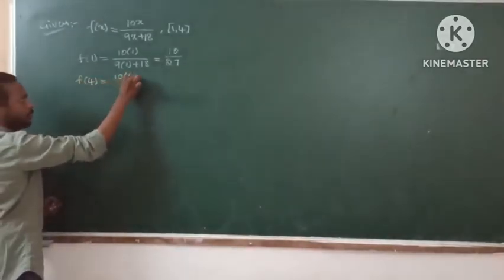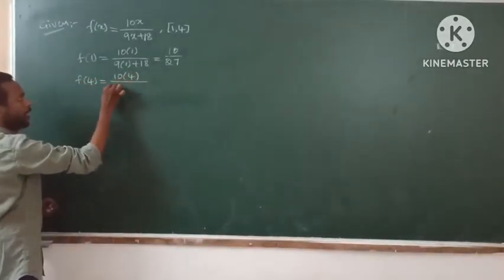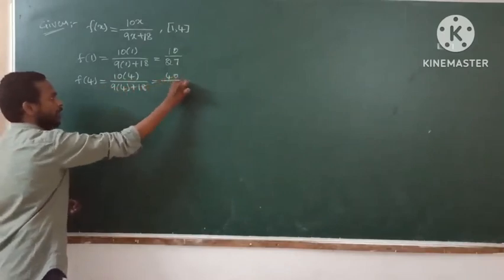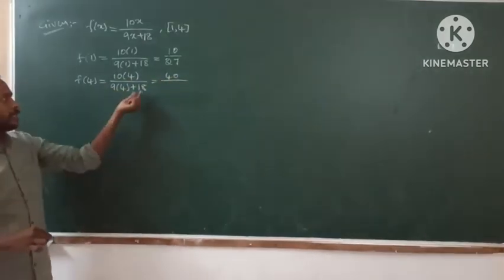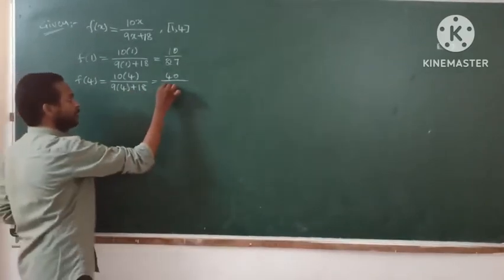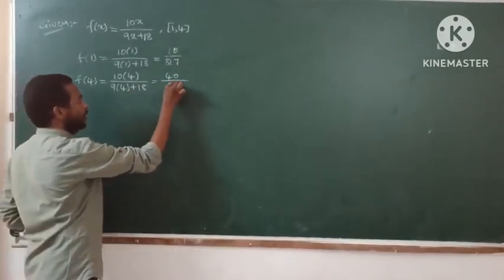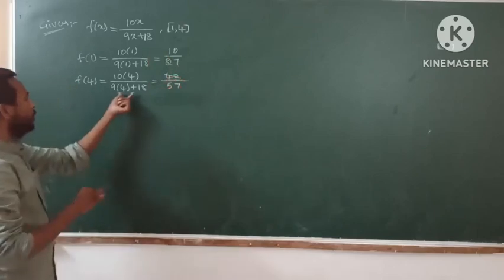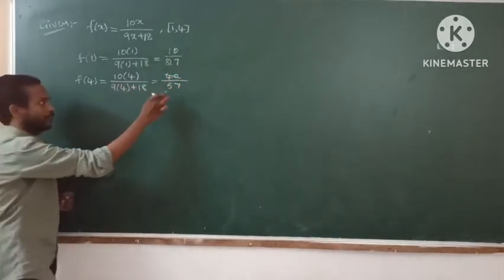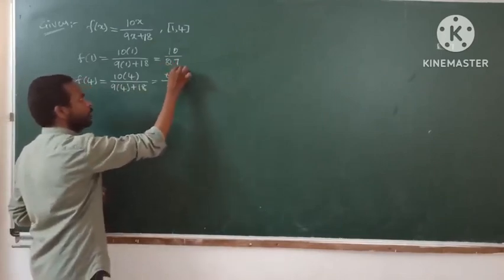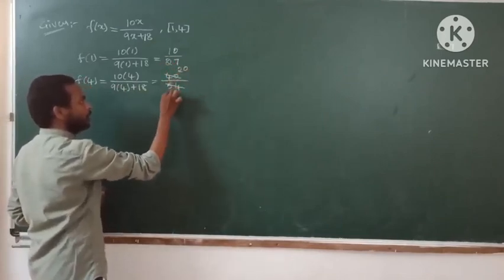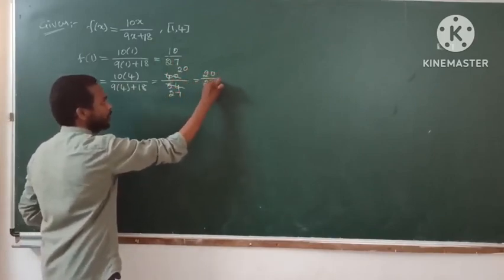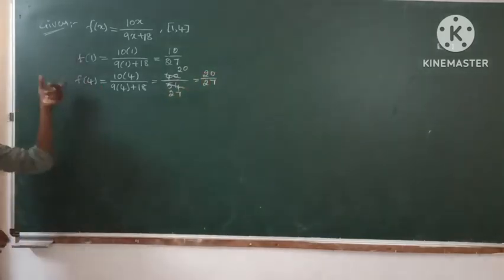For f(4), substitute x = 4: we get 40 divided by (9×4 + 18), which is 40 divided by (36 + 18) = 40/54. Simplifying: 9 × 4 = 36, 36 + 18 = 54. So 40/54 simplifies — dividing by 2 — to 20/27. So f(4) = 20/27.